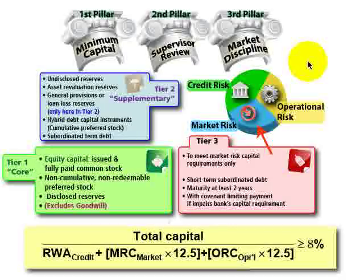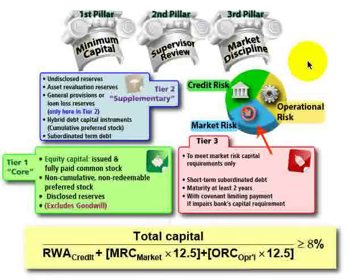When we speak of the Basel Accord, it's helpful to remember there are basically two Basel Accords. The original Basel Accord was implemented in 1988, so we call that the Original Accord or the 1988 Capital Accord. It had several goals, including to protect against systematic risk and to ensure the solvency of the major participating banks.